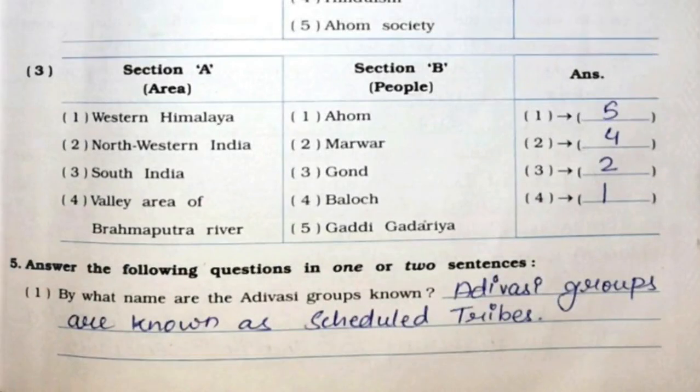Third part of Match the Following: Western Himalaya — option 5, Gaddi Gadaria. Northwestern India — option 4, Baloch. South India — option 2, Marwad. Valley area of Brahmaputra river — option 1, Ahom. Now we'll continue with Question 5, Answer in One or Two Sentences.